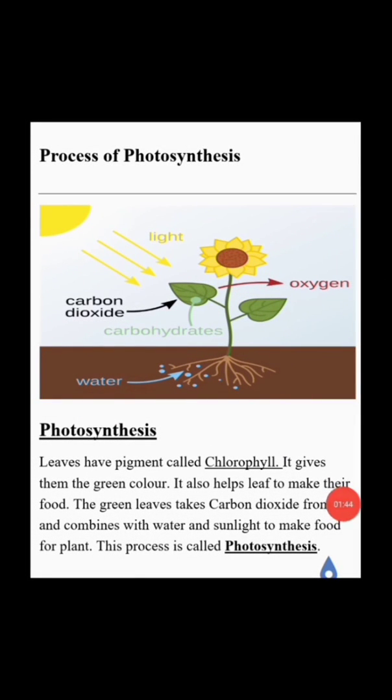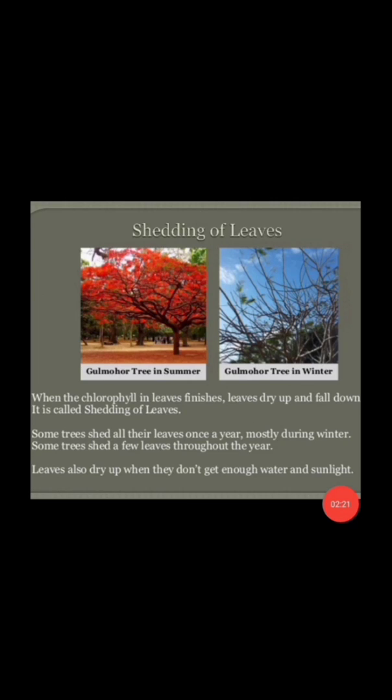The main function of a leaf is photosynthesis. Leaves have a pigment called chlorophyll. Chlorophyll gives a green colour to leaves. You have to remember: leaves have a green colour due to chlorophyll. It also helps the leaves to make their food. The green leaves take carbon dioxide from air and combine it with water and sunlight to make food for plants. This process is called photosynthesis.